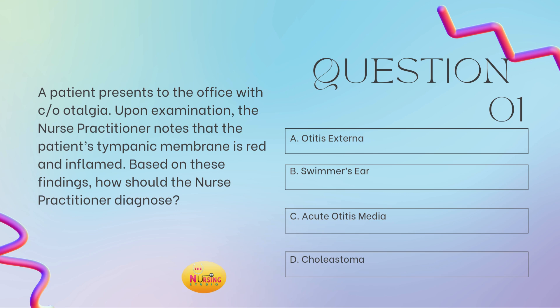I always recommend reading the stem of the question first because it allows you to slow down and ensure that you're answering what is even being asked. The stem states: based on these findings, how should the nurse practitioner diagnose? So we're looking for a diagnosis. We have to run it back and look at the assessment findings to create our differential and figure out what all of these things put together form as our diagnosis.